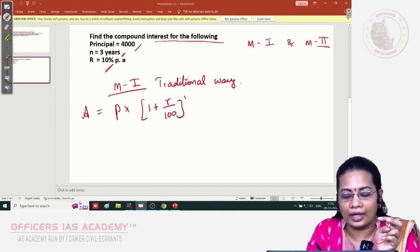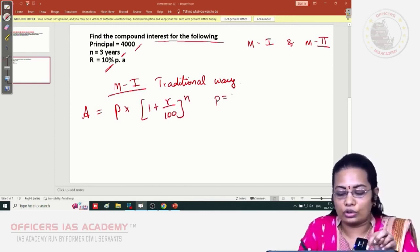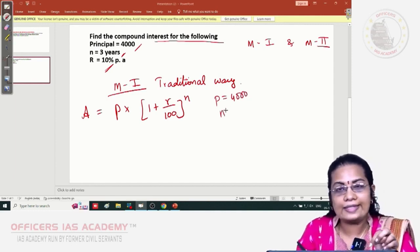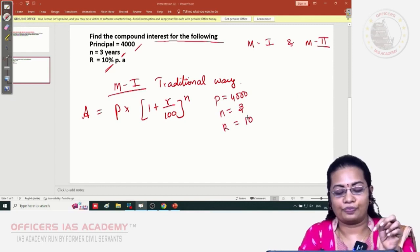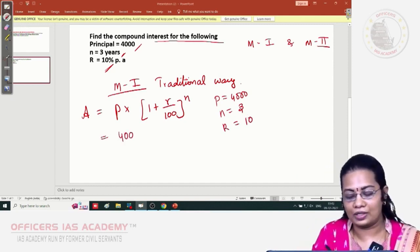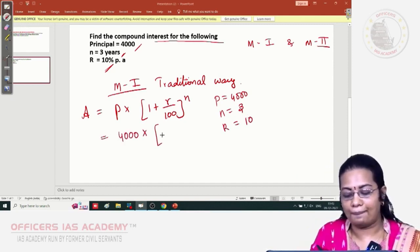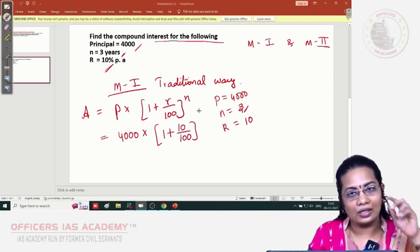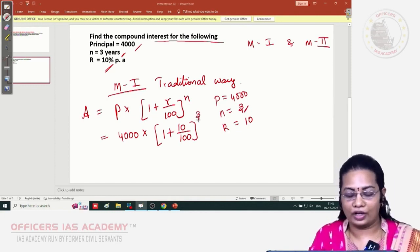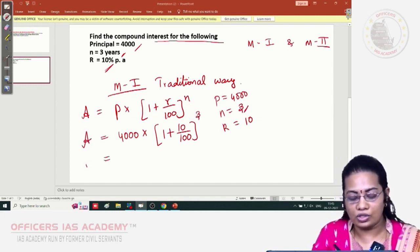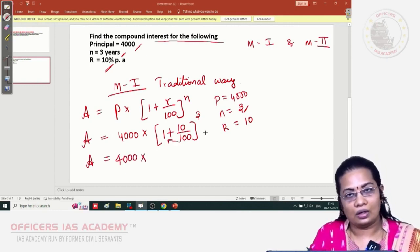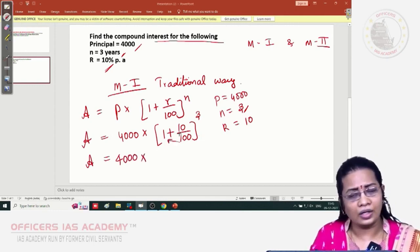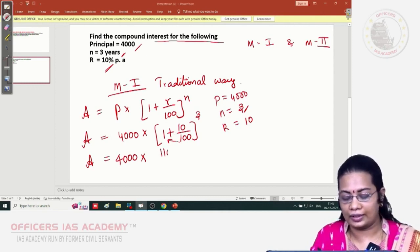Here P is 4,000 rupees, n is 3 years, and rate of interest is 10% per annum. Let me substitute everything: 4,000 × (1 + 10/100)^3. With the amounts, finally you will get 4,000 × (110/100)^3.